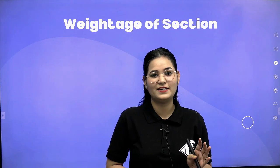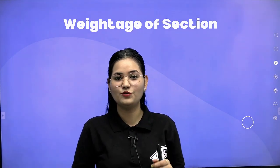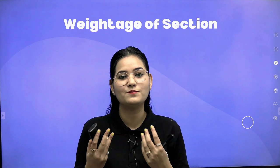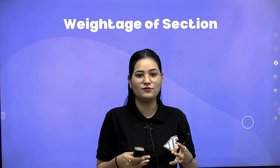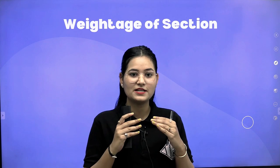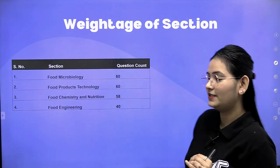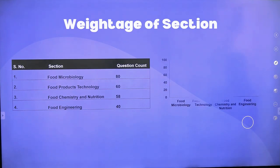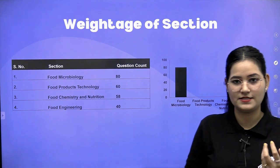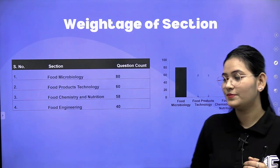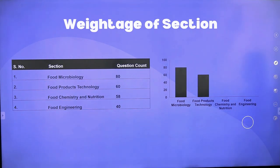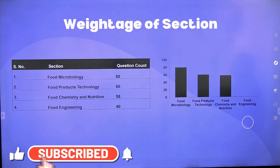I will tell you about the weightage of every section. There are total four sections. Food microbiology has 80 questions, so this section has a lot of weightage in this examination. The second section — food product technology — has 60 questions. Food chemistry and nutrition has 58 questions, and food engineering has 40 questions.